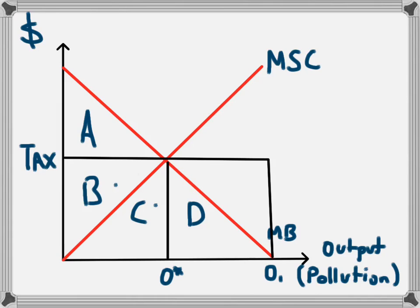If the business were to keep producing up until O1, the benefit they would receive from doing that would be triangle D. This would be the benefit they receive, but they would have to pay a tax of D plus E. So it wouldn't be worthwhile. As a result, their output falls back to the O* level, and the amount of pollution in the atmosphere is that optimum level of pollution tied to O*.